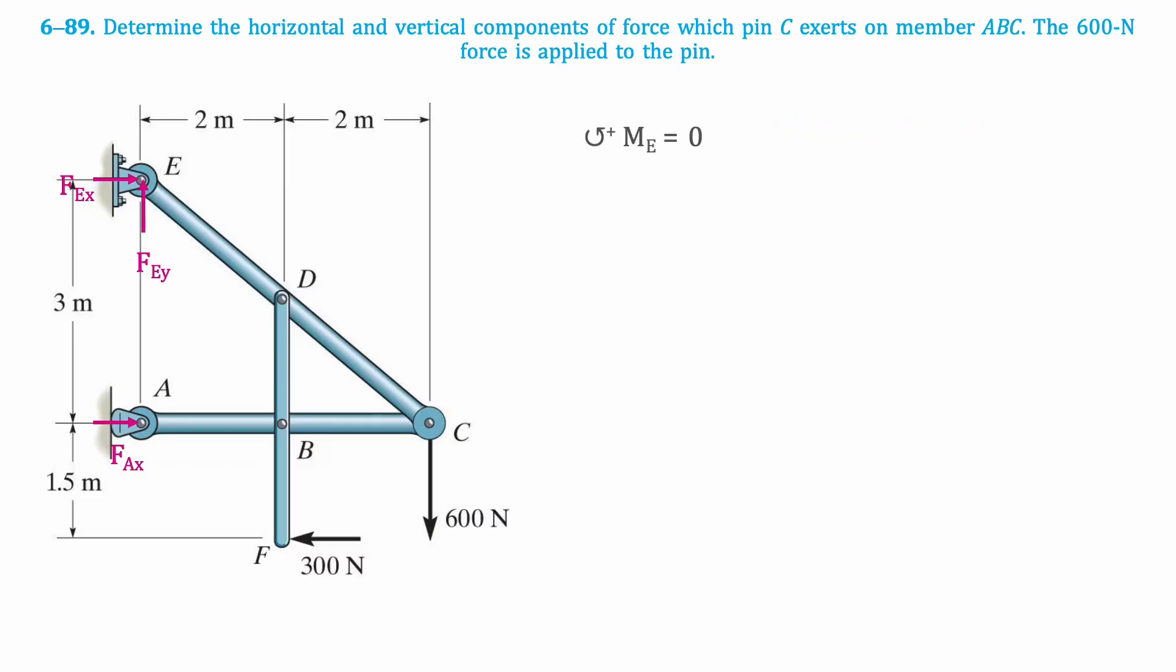Then we'll take the moment about point E. Since the components of point E pass through point E, they are not included in the calculation. This is the resulting equation, which after isolating for FAX results in 1250 newtons.